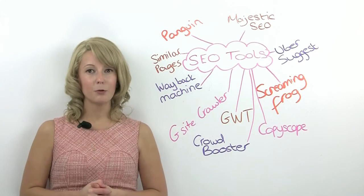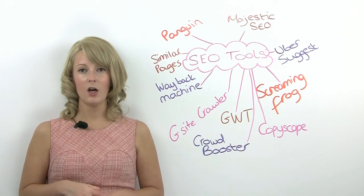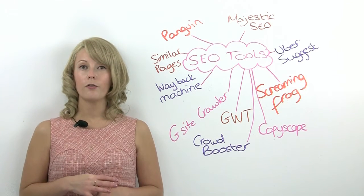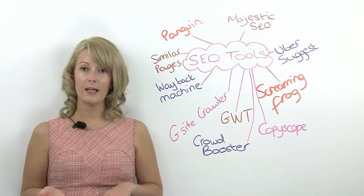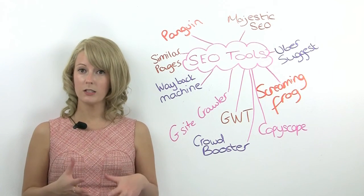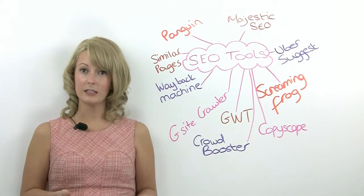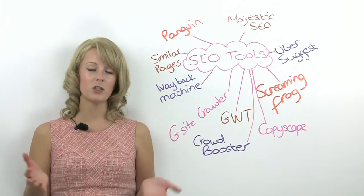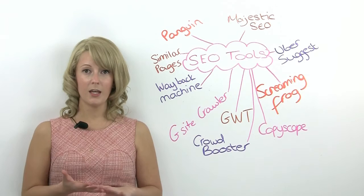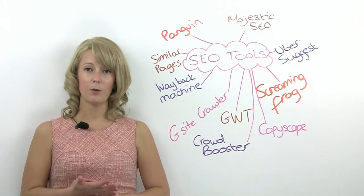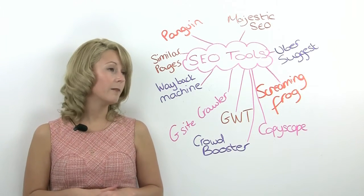CopyScape is a brilliant tool for checking if you've got any duplicate content issues. For example, it could be on a page on your own site or it could be on another site. Because it's checked on a page by page basis it can be either way — it doesn't matter where it is online, CopyScape will find it.